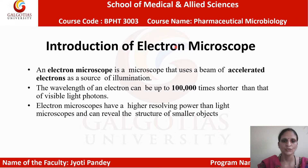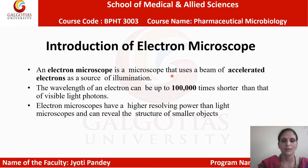What is Electron Microscope? Electron Microscope is a microscope that uses a beam of accelerated electrons as a source of illumination. It is used for visualization of smaller size organisms, especially microorganisms. The wavelength of an electron can be up to 100,000 times shorter than the visual light photon in this electron microscope.